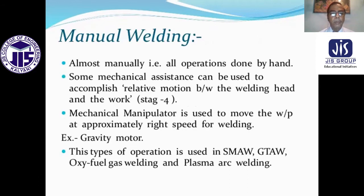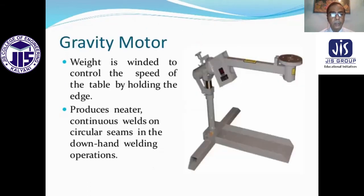Manual welding means almost all operations are done by hand. Some mechanical assistance can be used to accomplish relative motion between the welding head and the arc — that is stage four. A mechanical manipulator is used to move the arc piece at approximately the right speed for welding. For example, a gravity motor. This type of operation is used in shielded metal arc welding, gas tungsten arc welding, oxy-fuel gas welding, and plasma arc welding. The gravity motor: a weight is wound to control the speed of the cable by holding the edges, producing a neater continuous weld on circular seams in downhand welding operations.